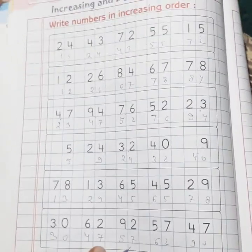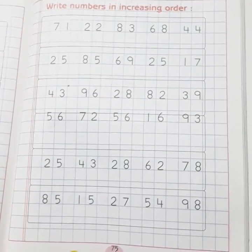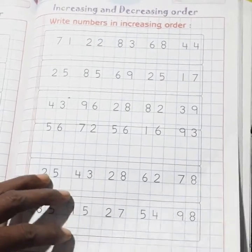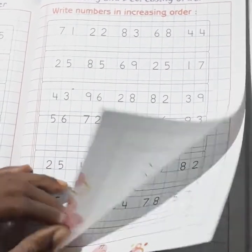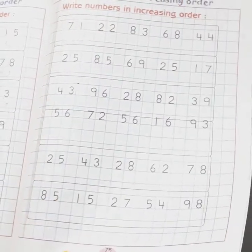So student, the next page, your same type. Page number 75, write the number in increasing order. Also do in your copy and also in your book. Very important for your examination. Thank you.